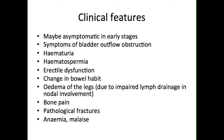Clinical features of prostate cancer are dependent on the size of the primary tumour and the amount of any systemic spread. T1 and T2 tumours can be asymptomatic, being found incidentally on a routine health check. However, these tumours can also present with lower urinary tract symptoms, such as those previously described for BPH.